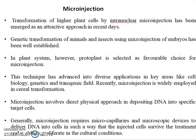In the case of plant systems, protoplast is one of the favorable choices for micro injection. This technique has advanced in diverse applications in key areas such as cell biology, genetics, and other transformation fields. Recently, micro injection is widely employed in serial transformation. Micro injection involves a direct physical approach of depositing the DNA into a specific target.